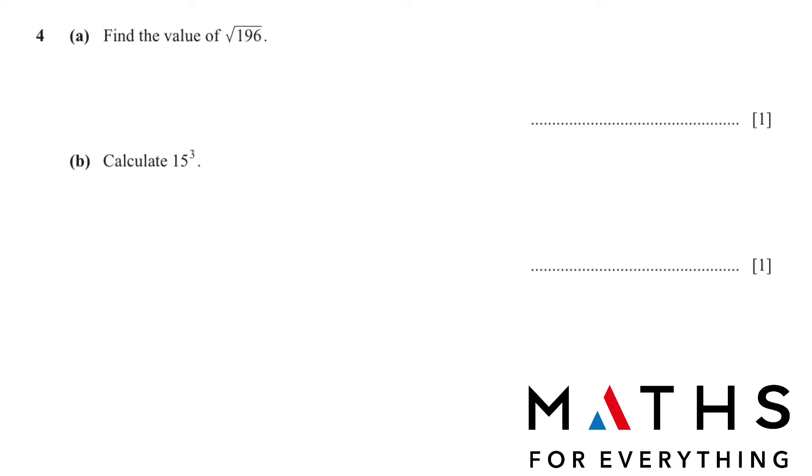Question number 4. Find the value of square root 196. You can just use a calculator directly. You will find the square root button there and write 196. You will get the answer as 14. Even for B, you don't have to do anything. You just have to use the calculator. 15 to the power of 3, which will give us 3,375. 15 to the power of 3 is also the same as 15 multiplied by 15 multiplied by 15.